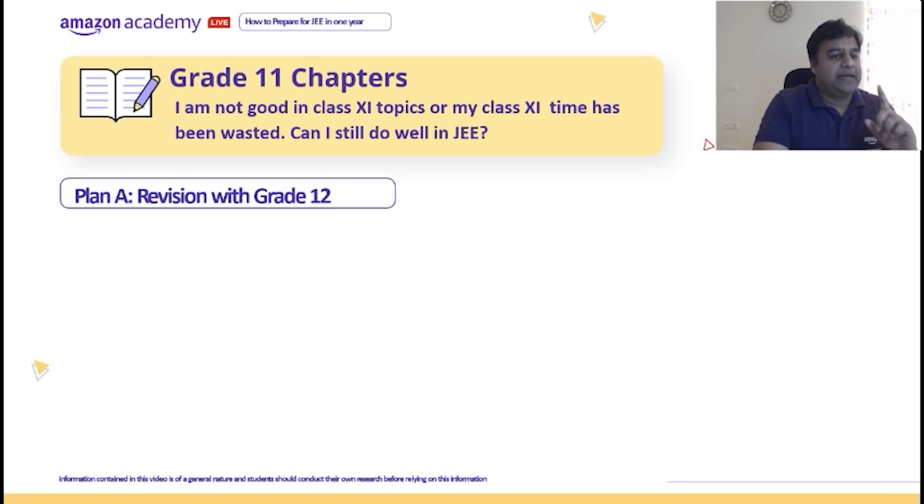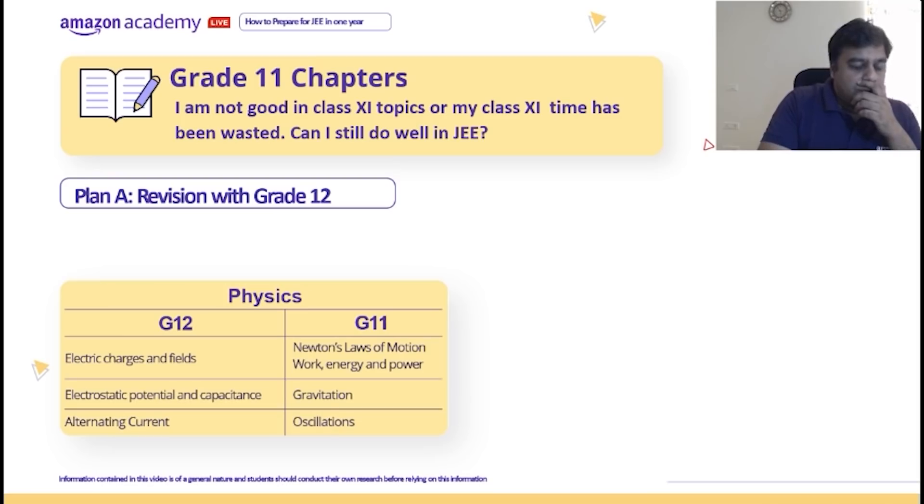So Plan A - the plan that I have for you is different compared to Plan B. Listen clearly. Plan A basically involves doing Grade 12 chapters alongside Grade 11. For example, in physics, electric charges and fields can be done with Newton's laws of motion and work power energy.